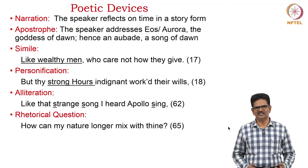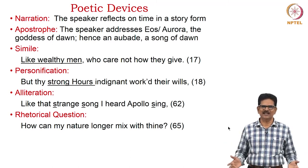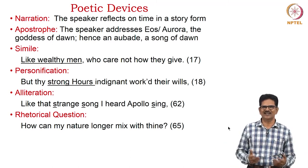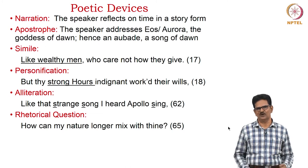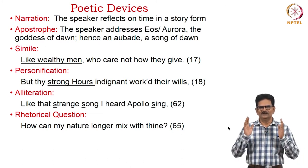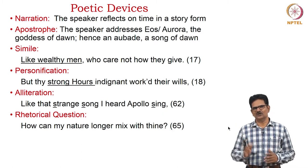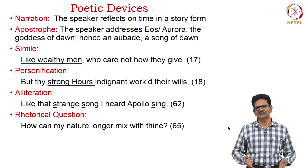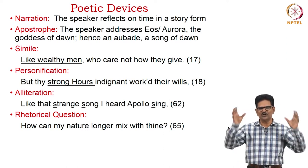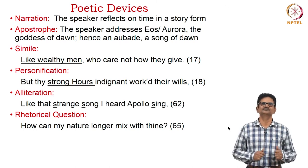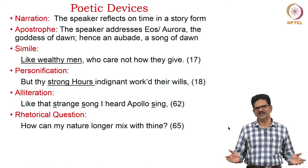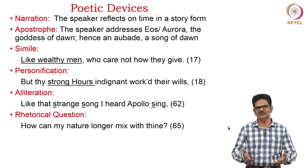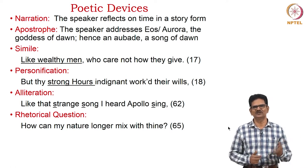There are many poetic devices in this poem. It is a lyrical narration in which the speaker reflects on time in a story form. Apostrophe is present — the speaker addresses Eos or Aurora, the goddess of dawn. Hence it is also called an aubade, that is, a song of dawn, because the poem deals with a situation at dawn. We have the simile 'like wealthy men who care not how they give' — whenever we give something, we must know the consequences of giving.